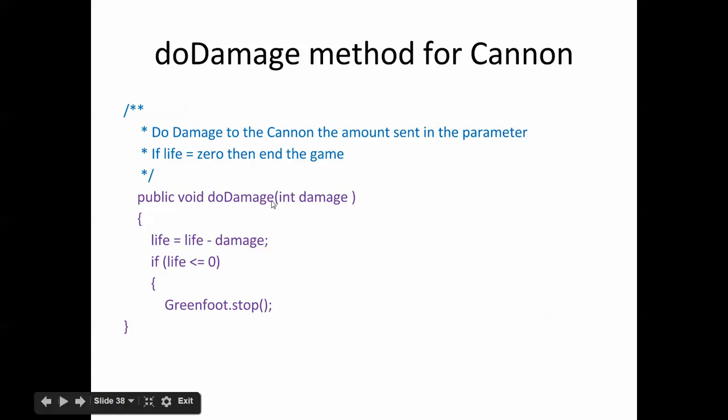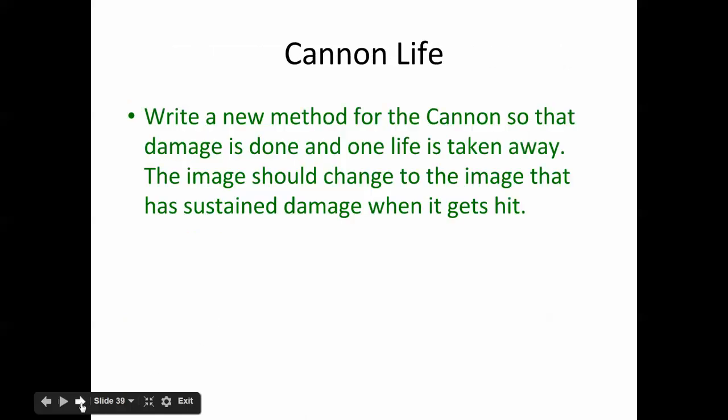So in the cannon, we already did this. We made a method called doDamage, right? And life equals life minus however much damage is being sent to it, from whoever, whatever object asked the cannon to do damage. So write a new method for the cannon so that damage is done and one life is taken away. The image should change to the image that has sustained damage. We already looked at this yesterday, but I wanted to explain it more.